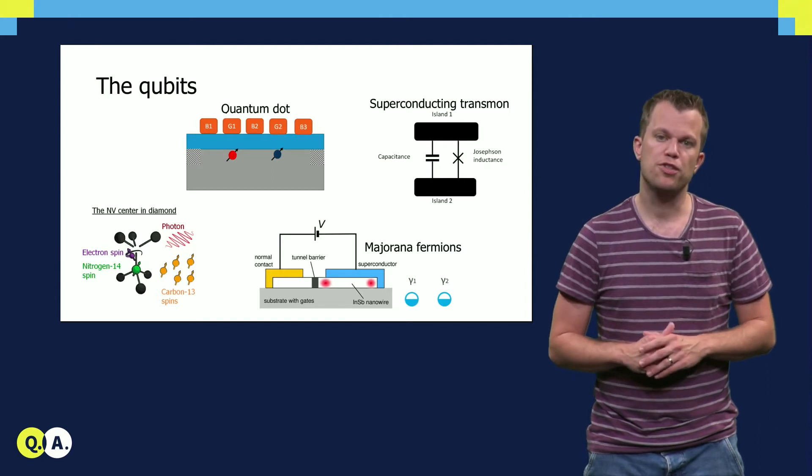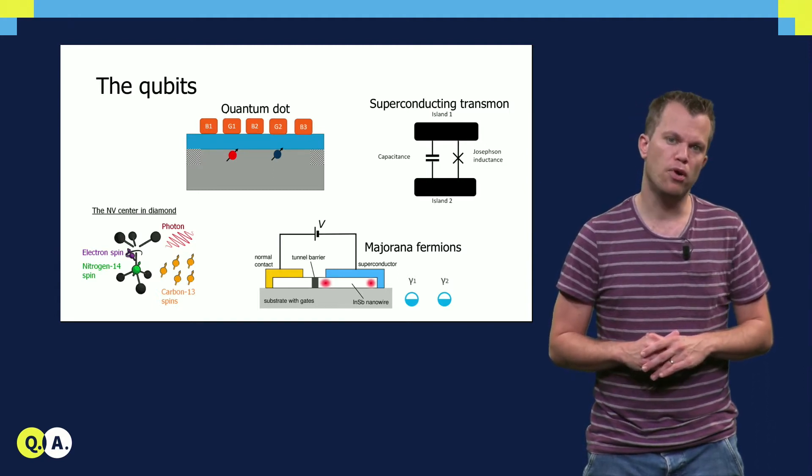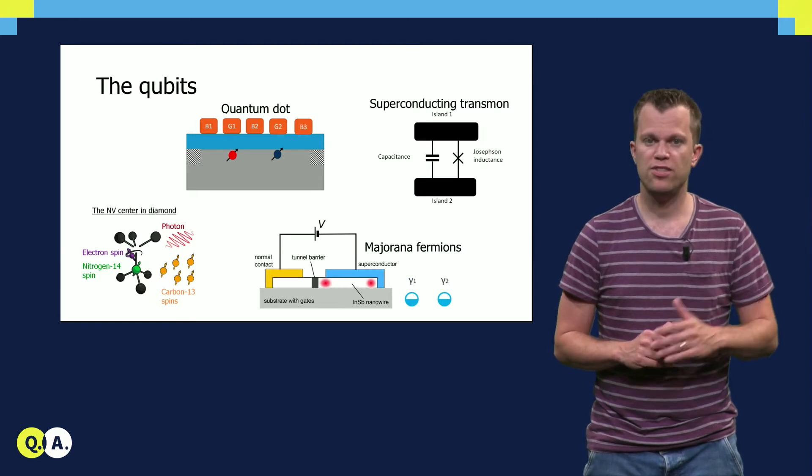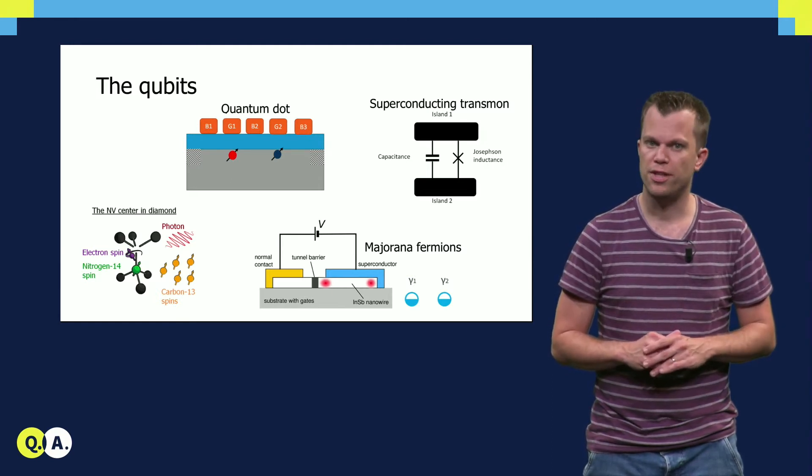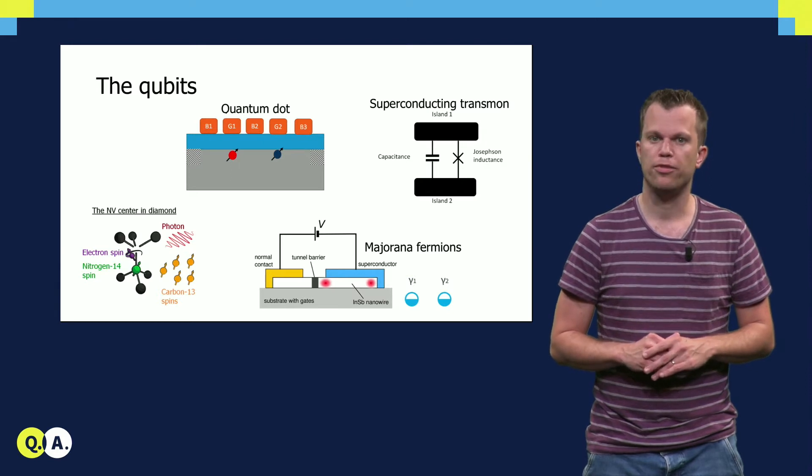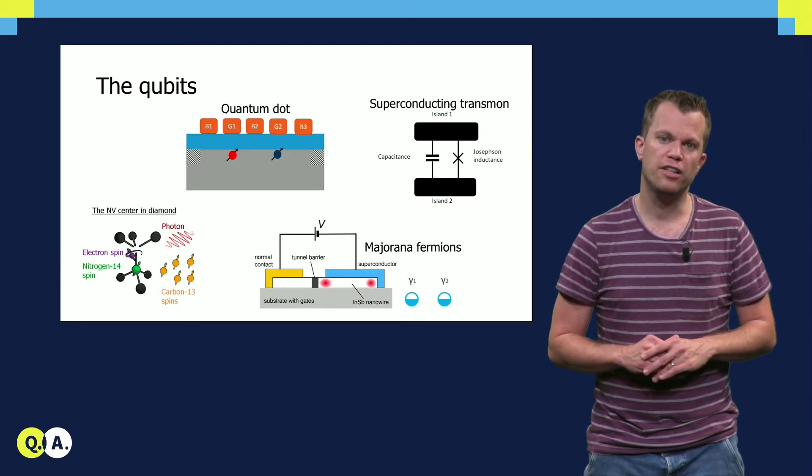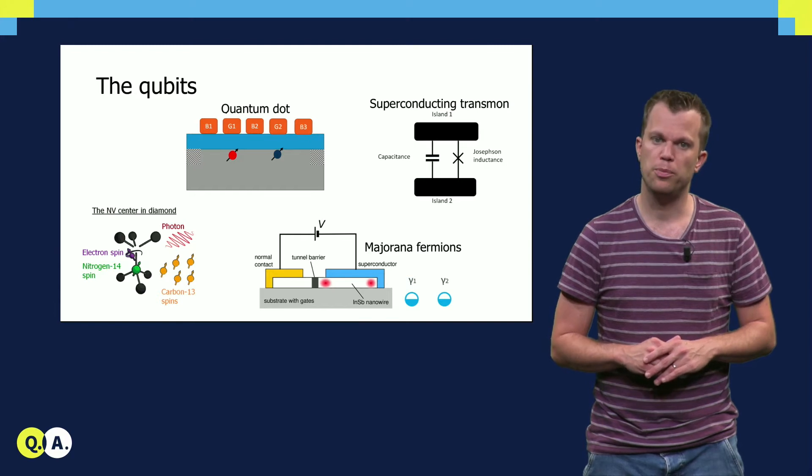In materials with low net nuclear spins detrimental magnetic interactions with the environment are small. In addition, the strong confinement leads to small overlap with other states. And these centers in diamond are particularly interesting as they can be coupled to photons, providing an optical link between spin qubits that are distant from each other.